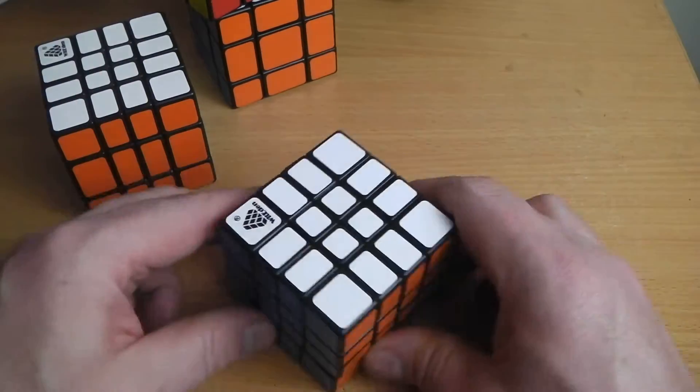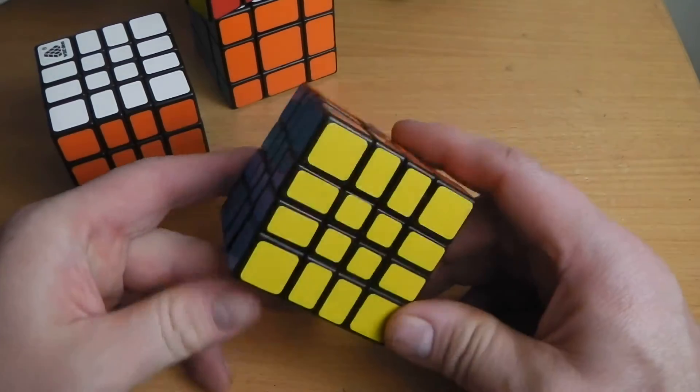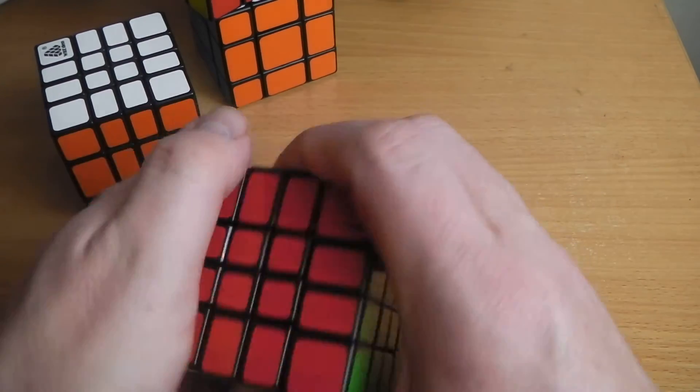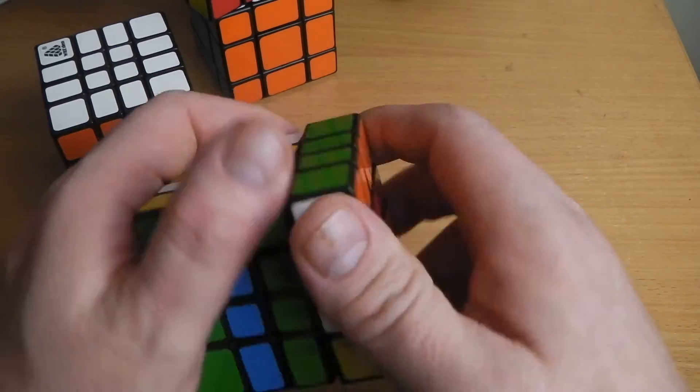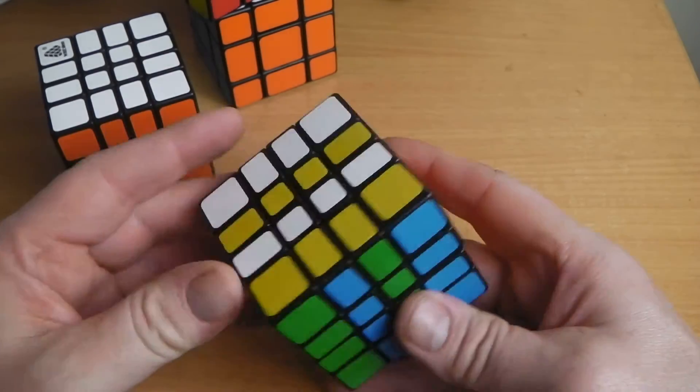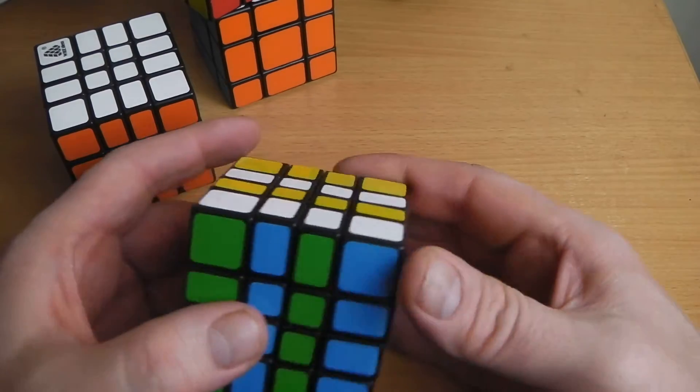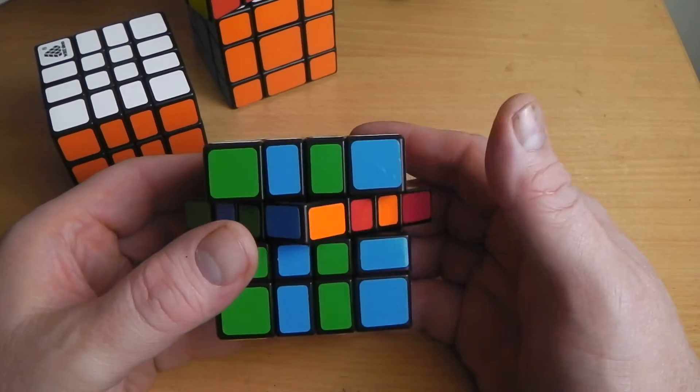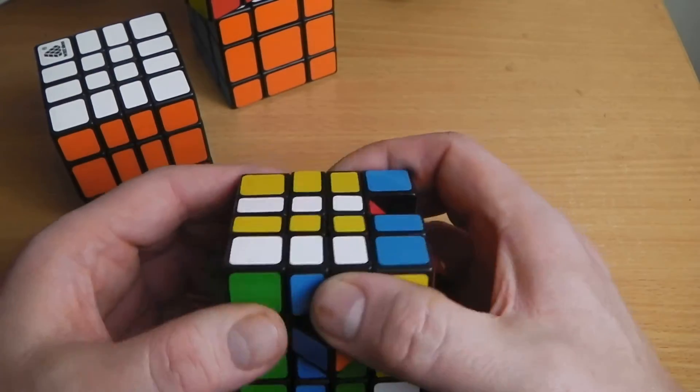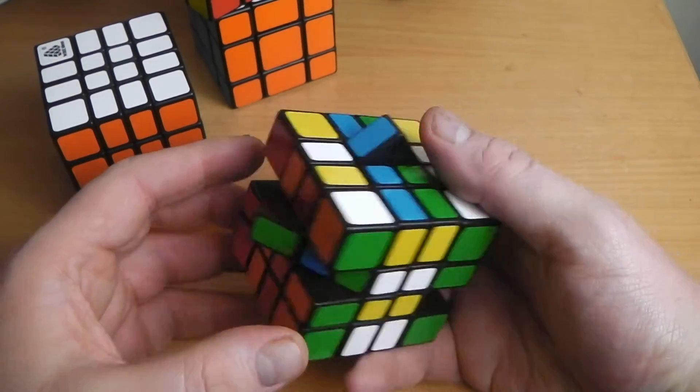And finally, the 4x4 version looks much like a 4x4 cube and turns very much the same way as well. But again, you can do those 45-degree turns. You don't have to turn both center layers, you can just turn one center layer and make turns on other faces.